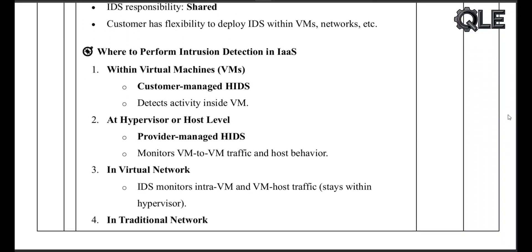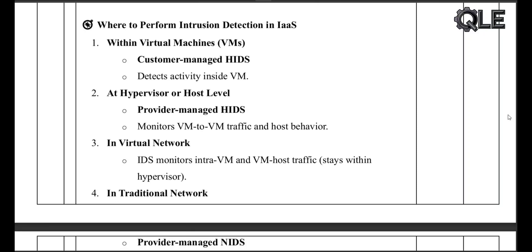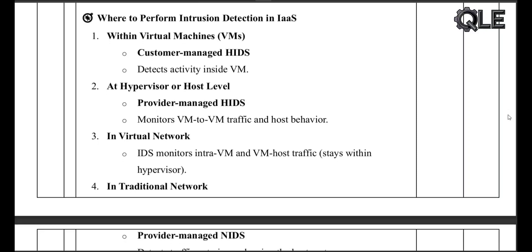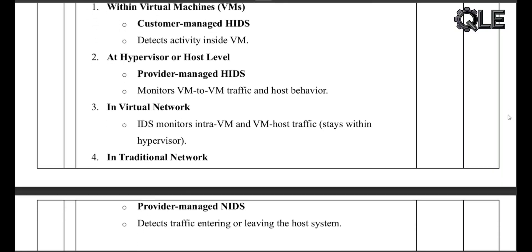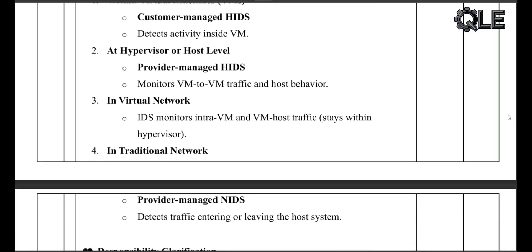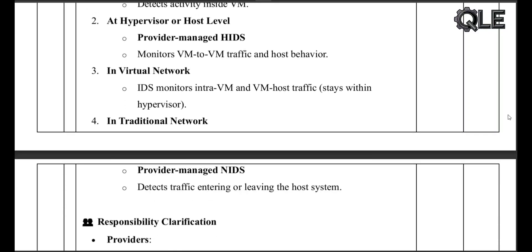Where can IDS be deployed? Intrusion detection can happen in four key locations: inside virtual machines, known as host-based IDS (HIDS), managed by the customer to monitor activity within the VM; at the hypervisor level, managed by the provider, which monitors activity between VMs and the host machine; in the virtual network, which monitors traffic between VMs that stays inside the hypervisor — traditional network IDS tools can't see this traffic.